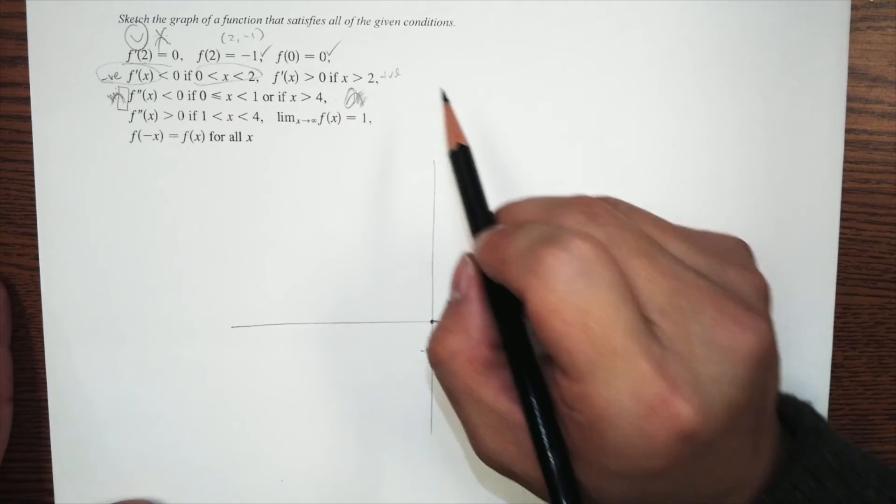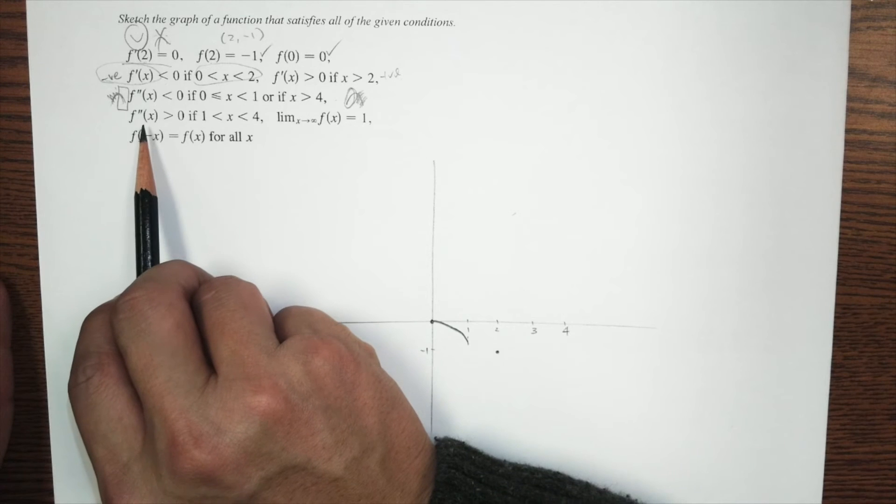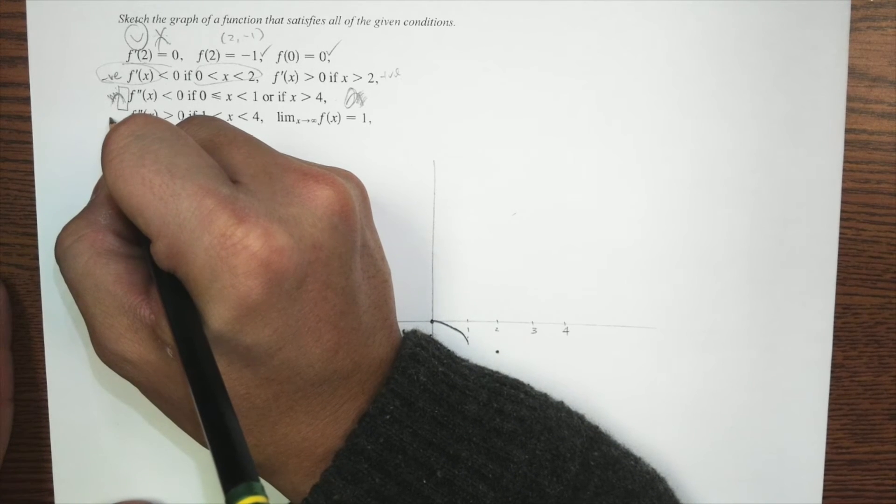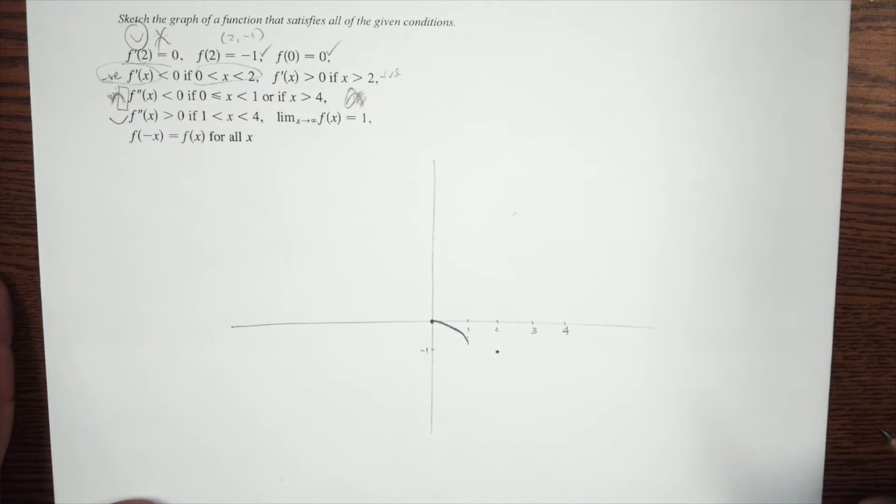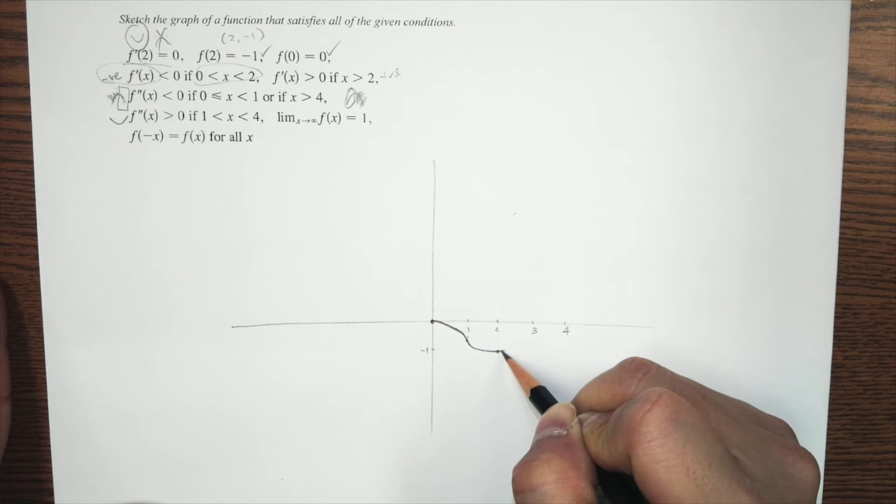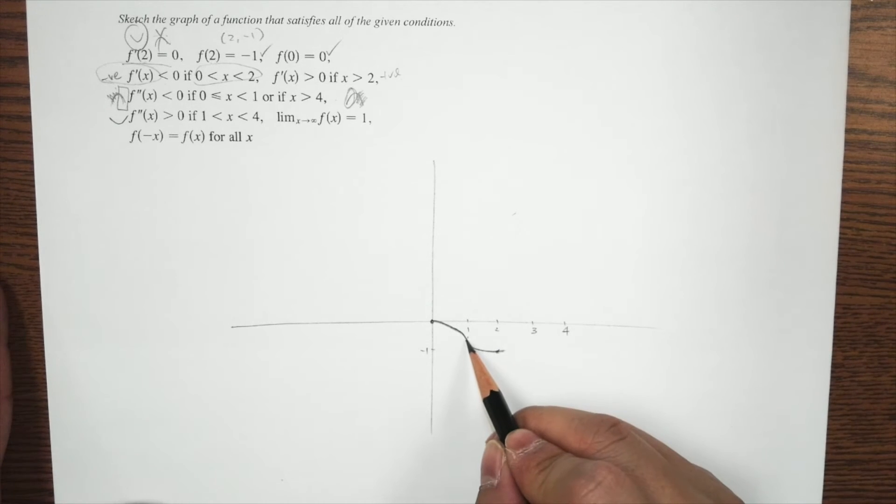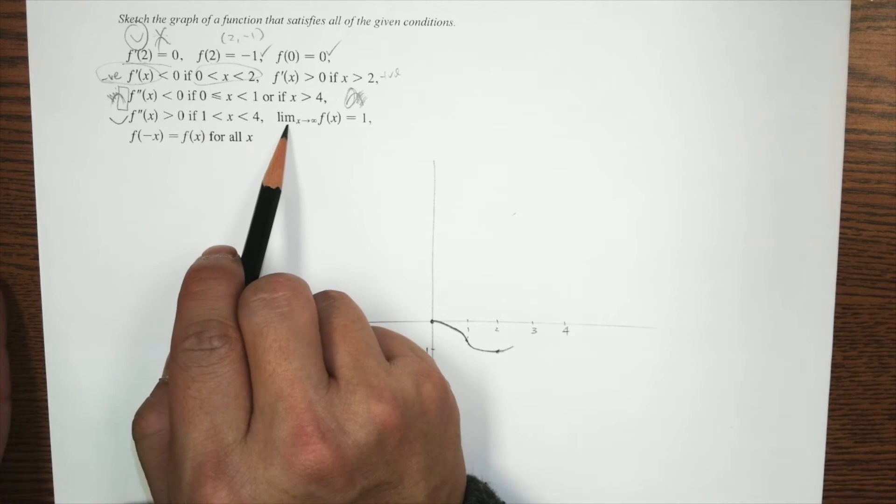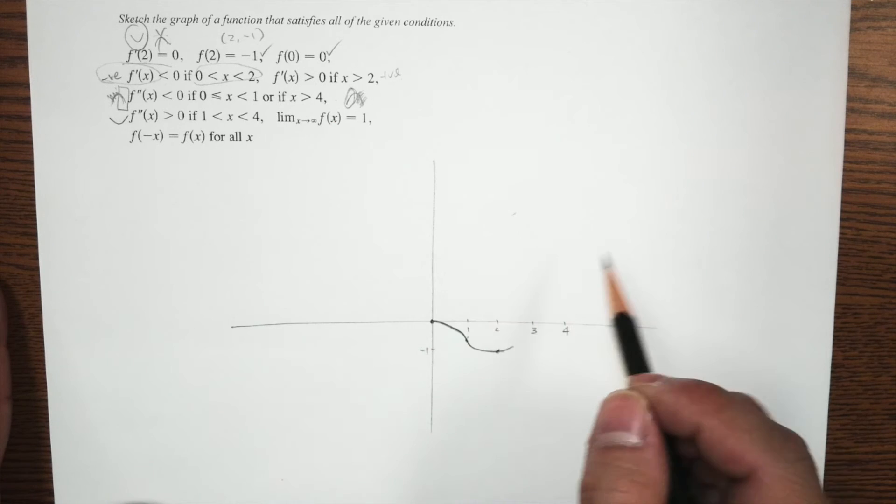And here it says f double prime is positive between 1 and 4. So it's going to be concave up. And, well, I guess it makes sense because we were expecting a minimum. So we can say it's a minimum right here. It's an inflection point. It's a concave up. That's a minimum. And the slope is going to be positive again. And then what else?